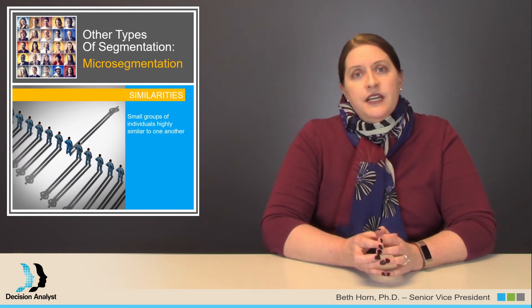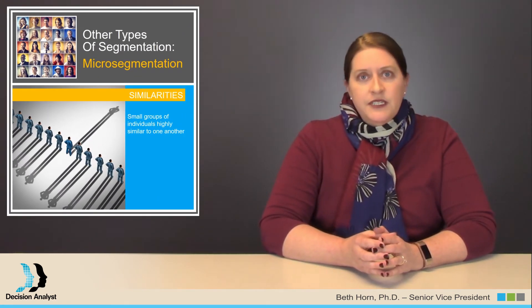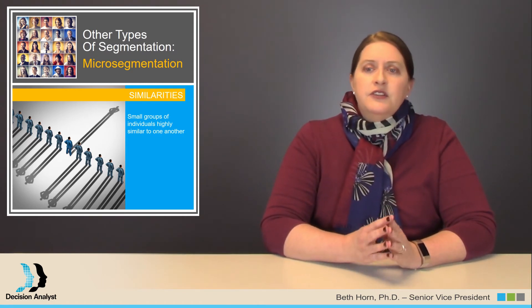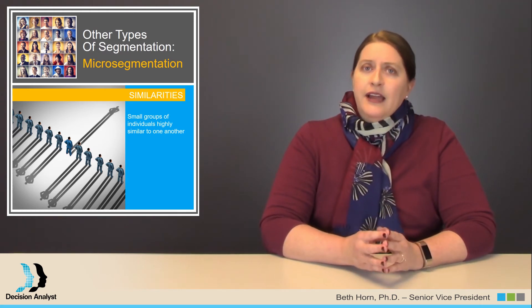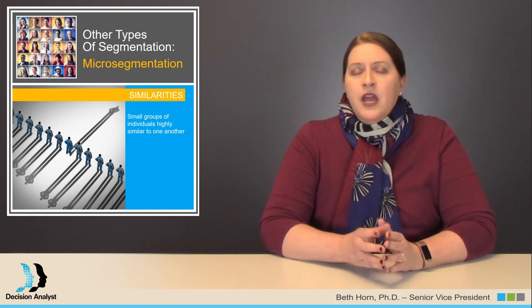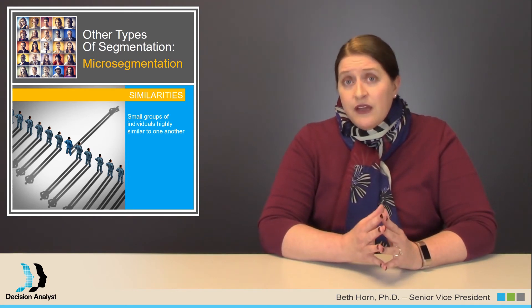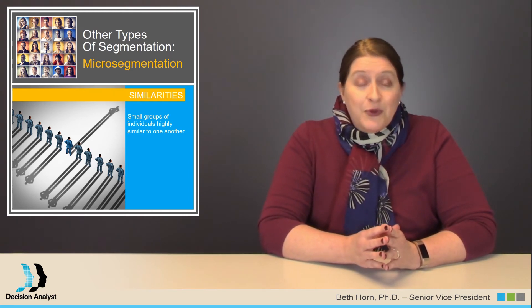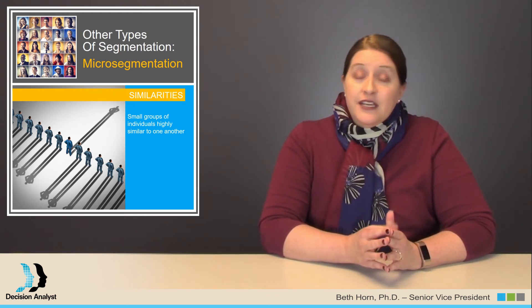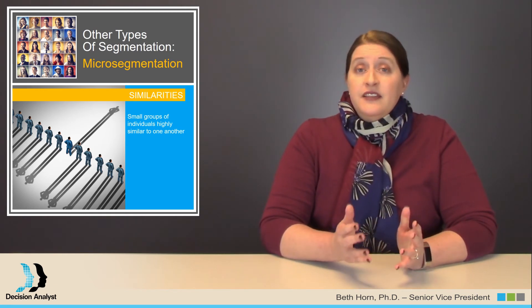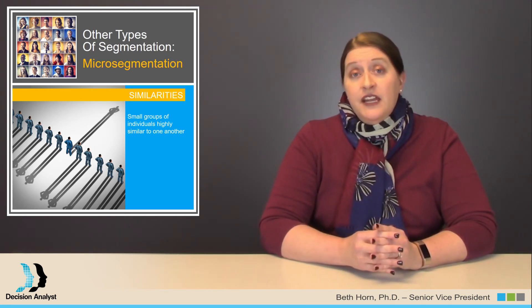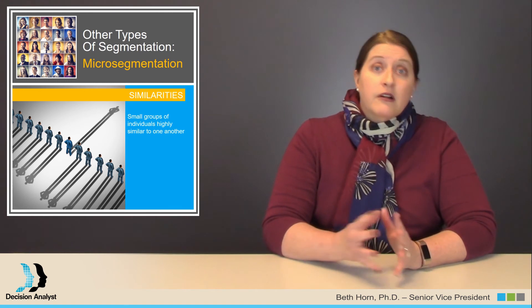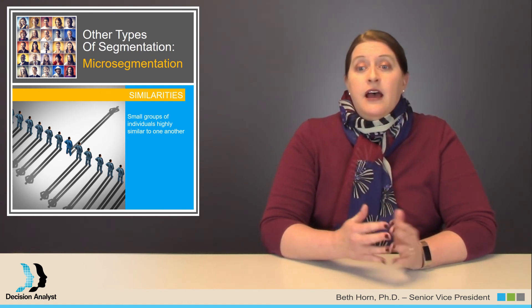The last type of segmentation I will discuss is micro segmentation. This technique requires thousands of respondents in order to find small niche groups that contain consumers who are highly similar to one another. An example micro segment might be females aged 18 to 24 who participate in outdoor activities two to four times per week and follow a vegan diet and lifestyle. This segment might only be 1 to 2% of any country's population, but their spending power in the all-natural outdoor athletic category may be quite high.